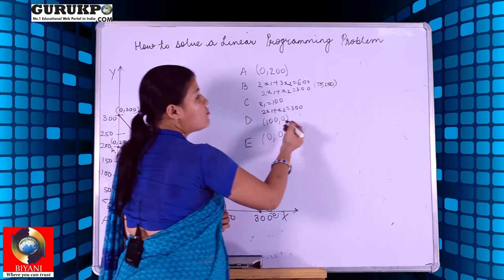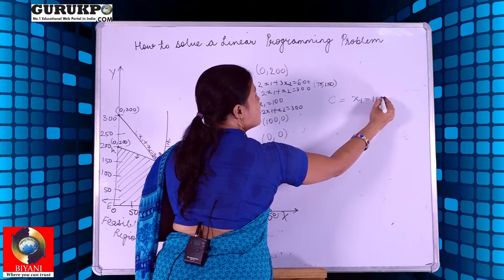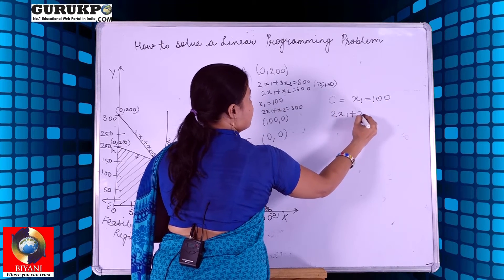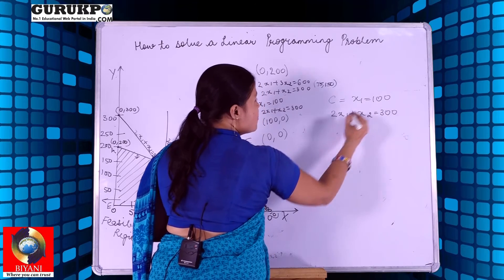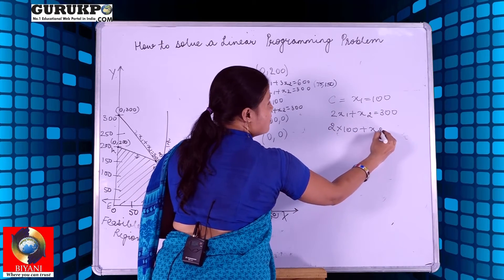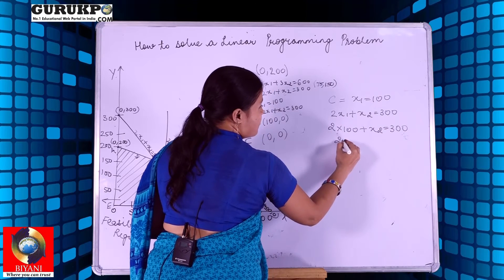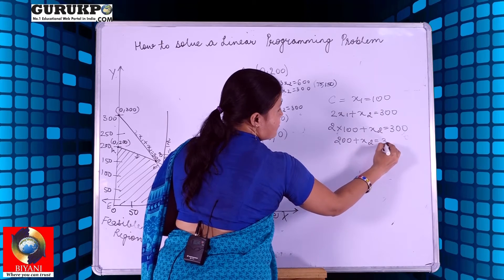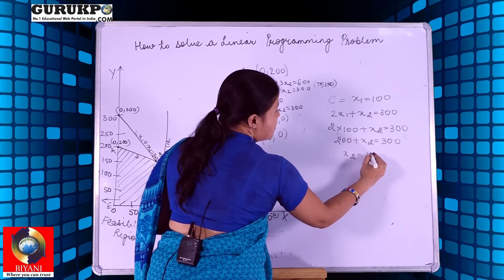To calculate point C, x1 = 100 is given. We substitute this value into the equation 2x1 + x2 = 300, giving 200 + x2 = 300, so x2 = 100. Point C is therefore (100, 100).